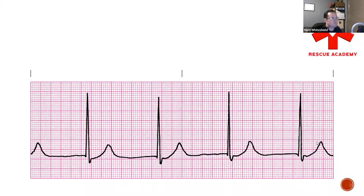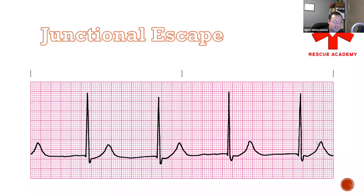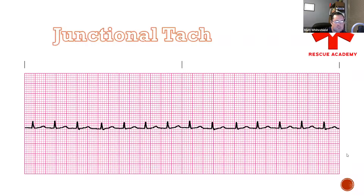We got a rate of about 40 to 50 and there are no P-waves — junctional escape. You can already see how easy it is to tell what these junctional rhythms are. All that matters is the actual rate; you just have to remember the rules — narrow QRS and pay attention to that P-wave. Next one: rate of about 140 — junctional tach.